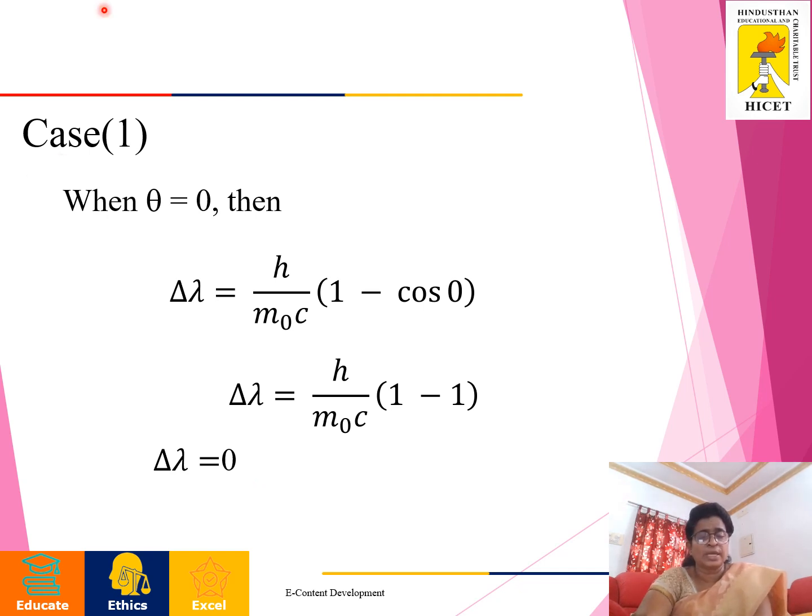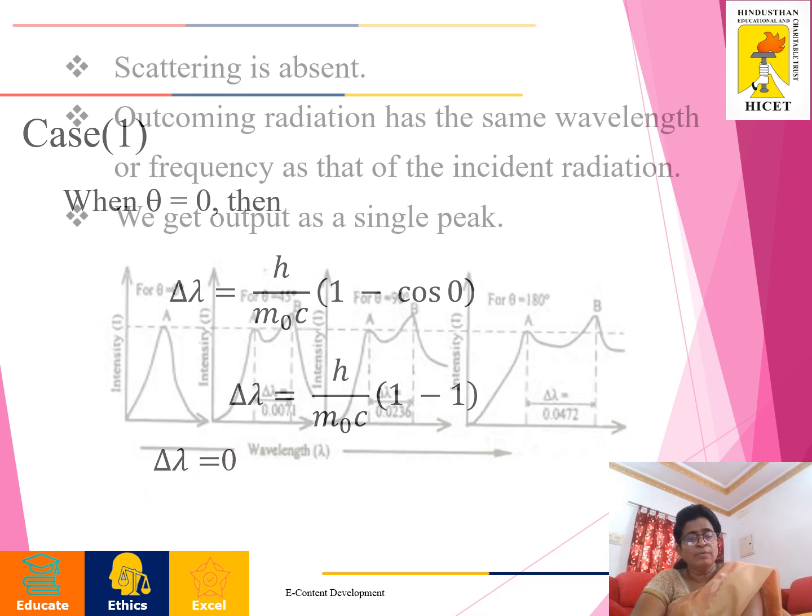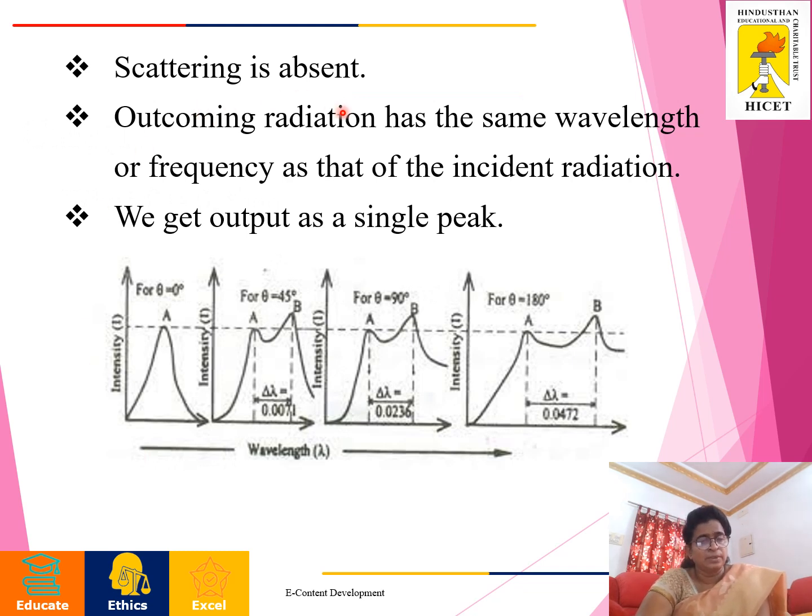Here are some cases. First case, when theta equals 0, we have to substitute there. Del lambda equals h by m not c times 1 minus cos 0. Cos 0 is 1. 1 minus 1 is 0. Therefore, change in wavelength is equal to 0. Change in wavelength equals 0 means the scattering is absent. That means outcoming radiation has the same wavelength or frequency as that of the incident radiation. From the experimental part, we got output as a single peak, that is A.